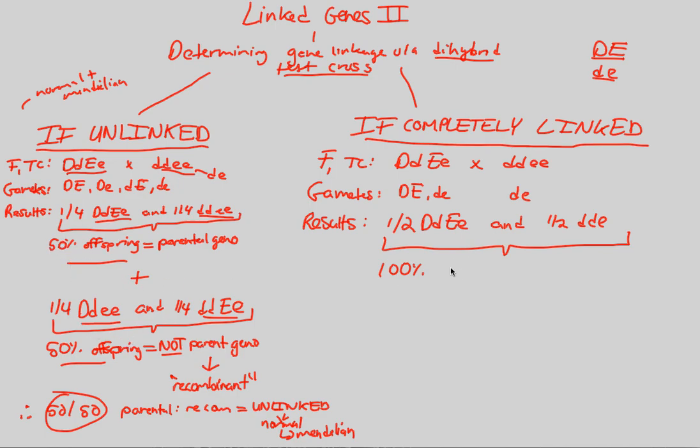100% of the offspring is equal to whose genotype? It's equal to our parental genotype. What's our parental genotype? It's right here in our F1 test cross. Both of these are our parental genotypes that we just got back in our F1 result cross. This means that we had no recombinants.